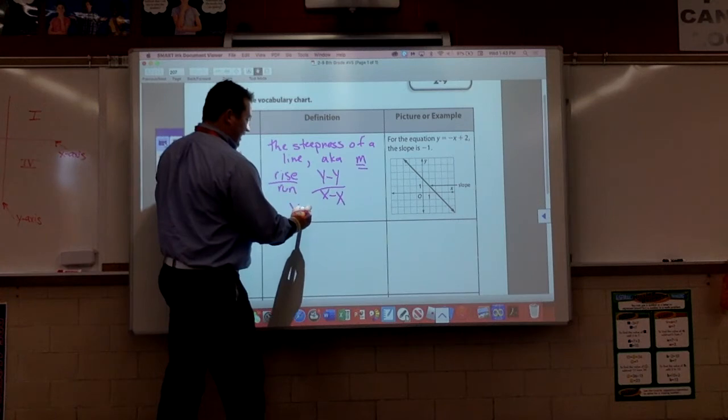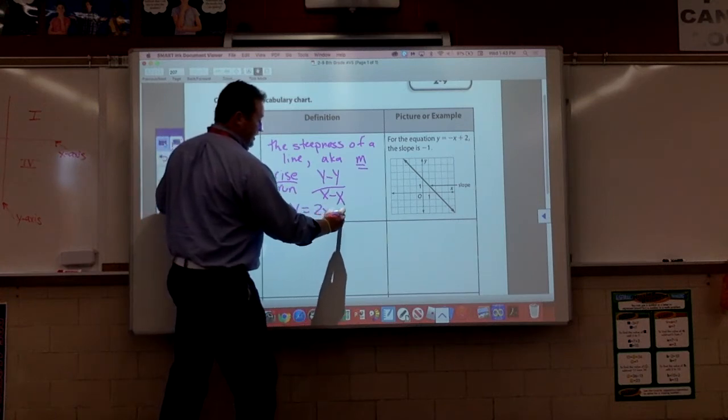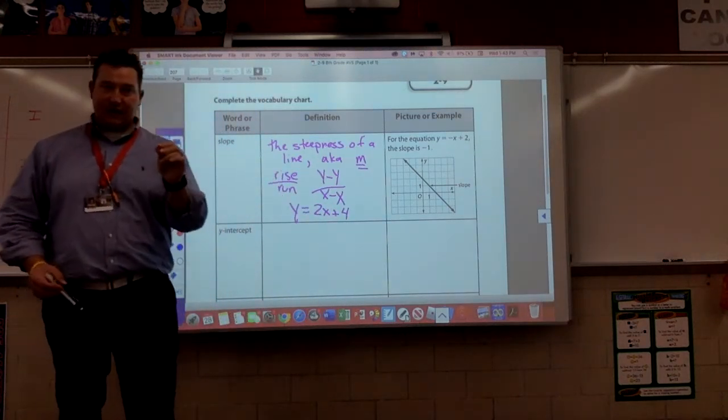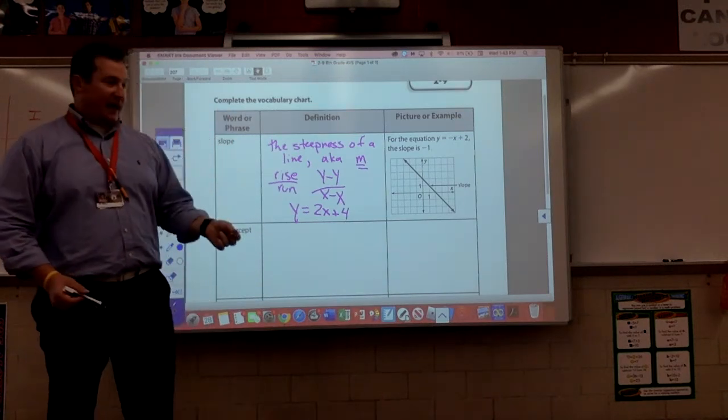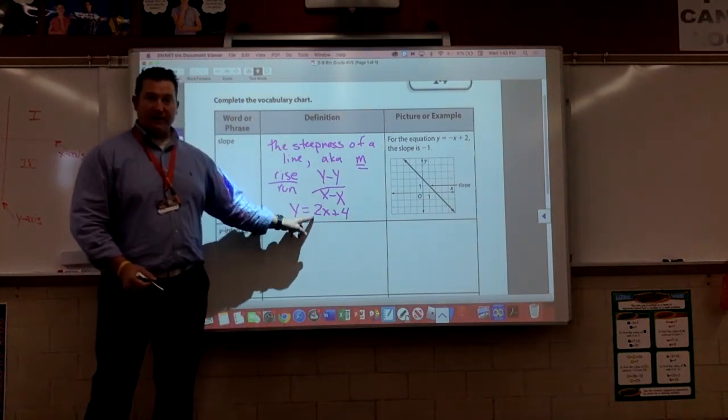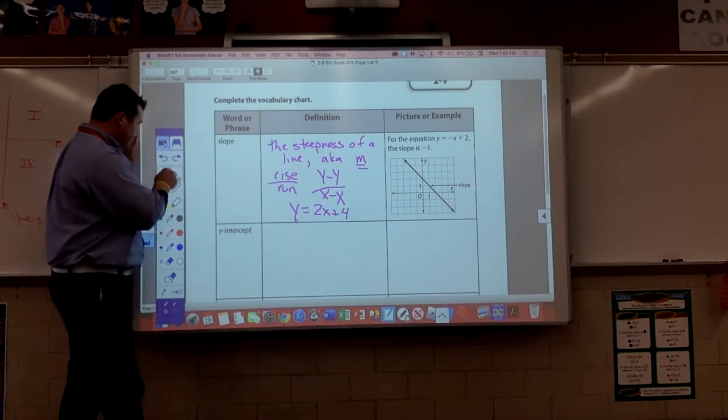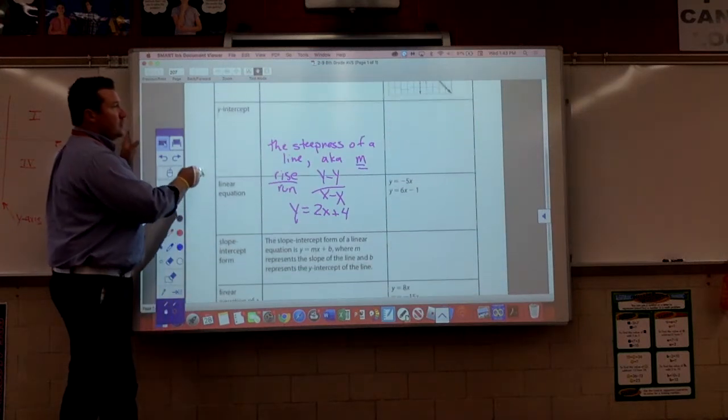So, in this equation, y equals 2x plus 4, we have to be able to identify the slope from that equation, 2, right? Because that's where the M would be.